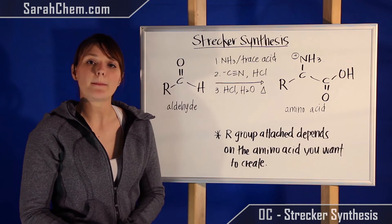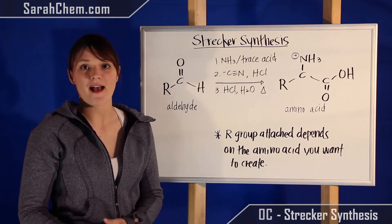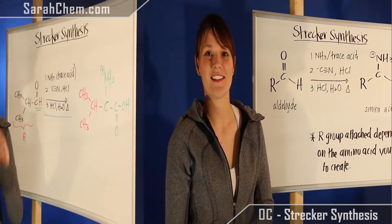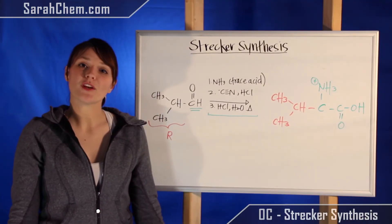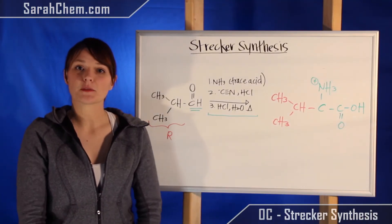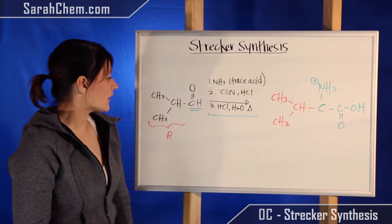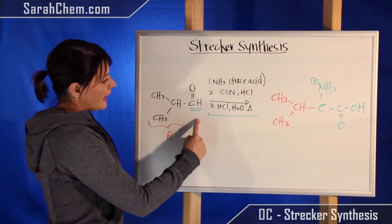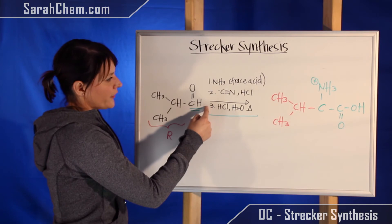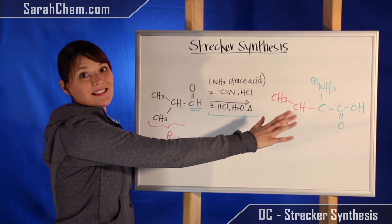So these are the three things that are happening in the Strecker synthesis for an amino acid and that's pretty much what happens in the process. Now we know what the Strecker synthesis is, let's apply what we've learned to an actual example. So let's say you're given an aldehyde to begin with and you're told that these are the reagents and you need to figure out what the product is.